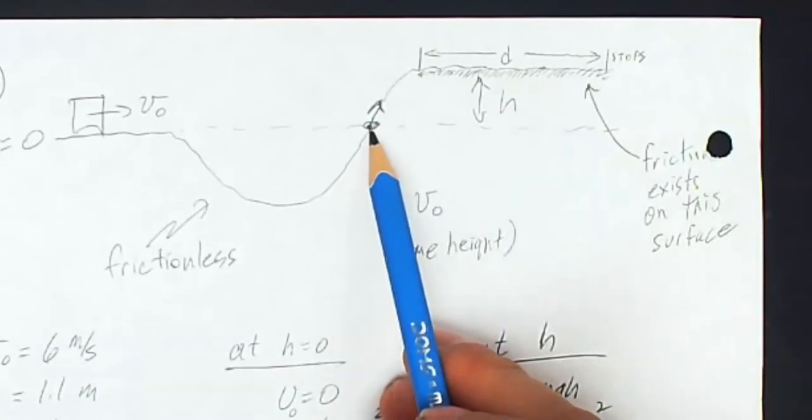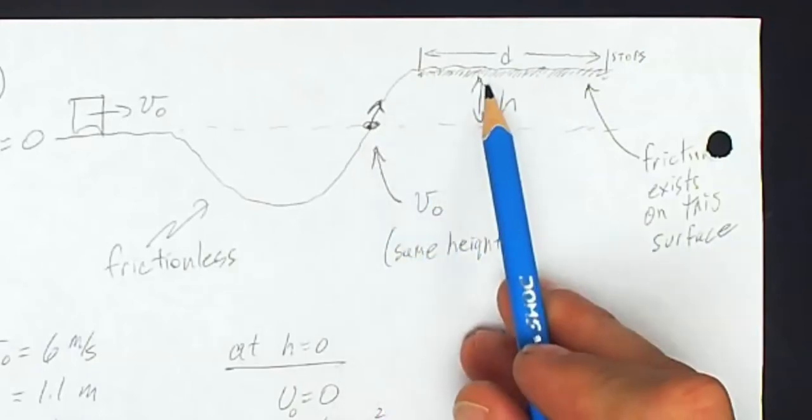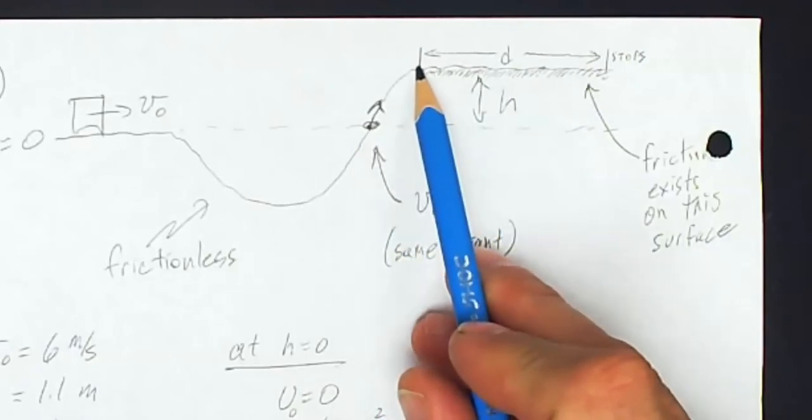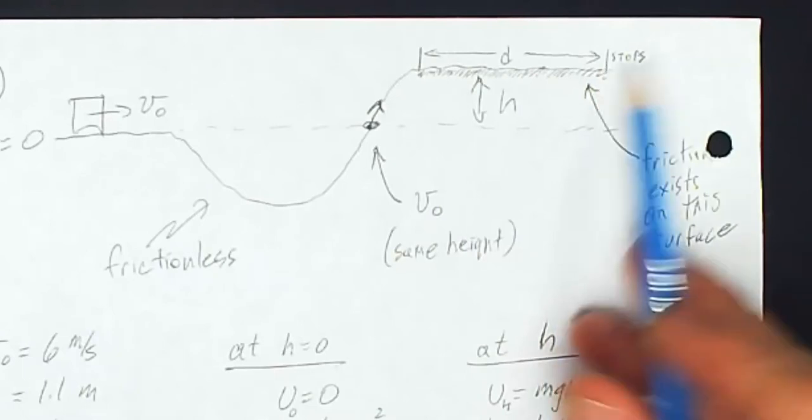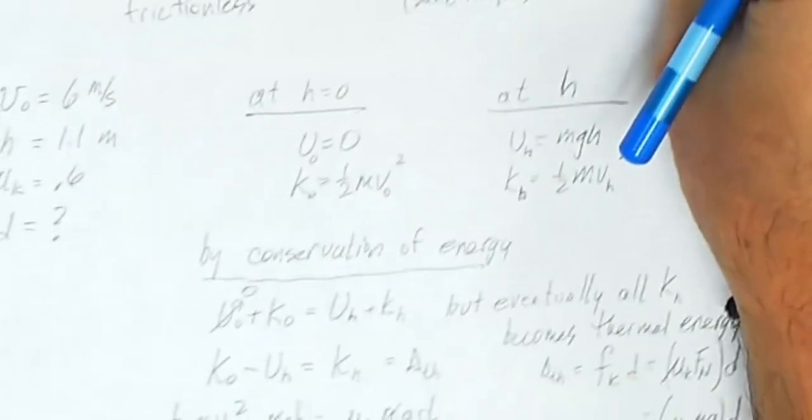That way, I can say I only have kinetic energy at the beginning. And then when I get up here to this location, I'll have kinetic energy and potential energy. And then when I get over here, I'll have potential energy and thermal energy.